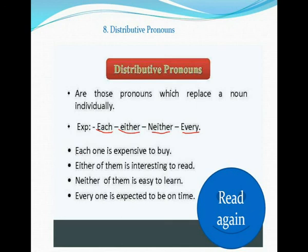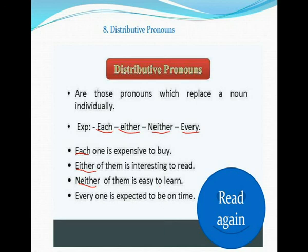Look at this sentence: 'Each one is expensive to buy.' There are too many pens kept there, but each one is expensive to buy. Next example: 'Either of them is interesting to read.' There are too many books but not a single one feels good to read. Third example: 'Neither of them is easy to learn.' Mathematics is too hard — there are many problems, maybe 5, 7, or 10, and neither of them is easy for you.